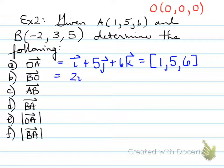BO can be written as from B to the origin, means that you're going to move from -2 to 0, which means up 2, from 3 to 0, that means -3, and from 5 to 0, which means -5. So in component form, that will be rewritten as [2, -3, -5].